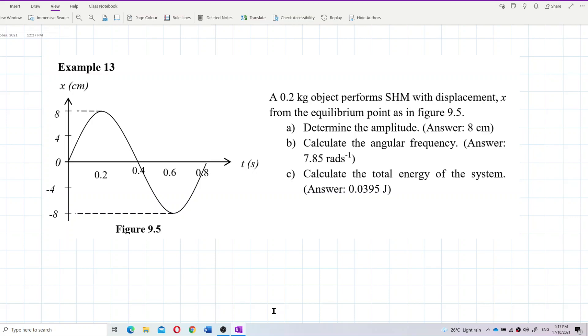A 0.2 kilogram object performs simple harmonic motion with displacement x from the equilibrium point as in figure 9.5. Now determine the amplitude, the angular frequency and the total energy of the system. What graph do we have here? We have a displacement time graph. Be careful with the unit. First thing I look at graph, I look at the unit. This is centimeter, not meter. So you need to change to SI unit meter.